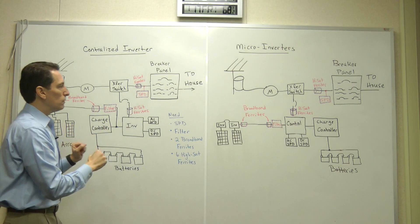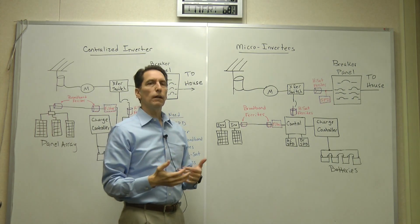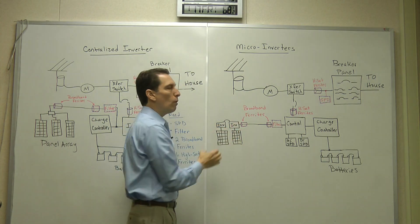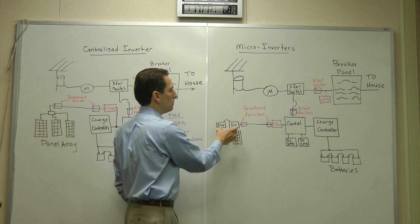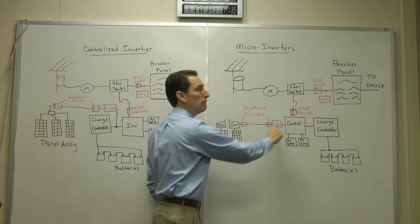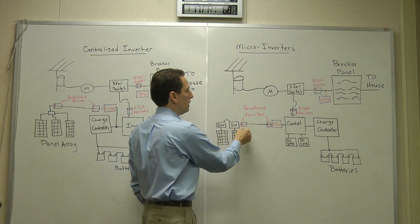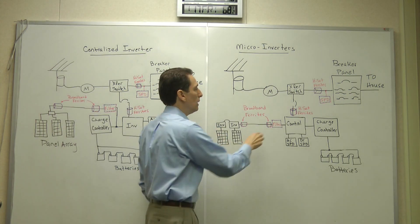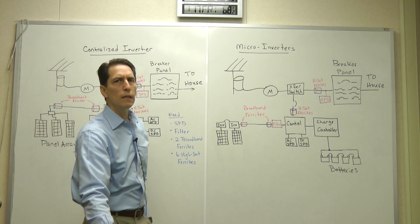Now this was the centralized inverter. It ends up that if you look at the microinverter case, it's very similar, and the protections are actually the same. The difference is that you have panels with small inverters usually mounted to the back of them, those microinverters. So that converts the DC voltage to AC voltage. So this line here is now AC voltage instead of DC in the other case. But the protections are really one and the same. You're going to add a couple of broadband ferrites to that long line, one at each end. You're going to add an inline filter. Now these filters are rated, I believe, to 250 volts AC.